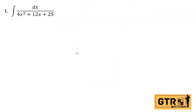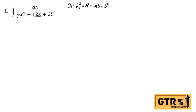To solve this type of expression, we have the integral of dx over 4x squared plus 12x plus 25. We will solve this by completing the square of the denominator. Using the formula for the square of a binomial, (A + B)² = A² + 2AB + B², we will make 4x² + 12x + blank a perfect square trinomial.